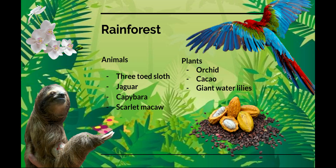Did you know the rainforest has four layers? Most animals in the rainforest live in the canopy, which is three layers up from the bottom. Millions of different kinds of plants and animals live here, and some haven't even been discovered yet. One of them is the sloth. Even though they're slow, they're built perfectly for life in the trees because their arms are longer than their legs and they have curved feet for grasping branches.